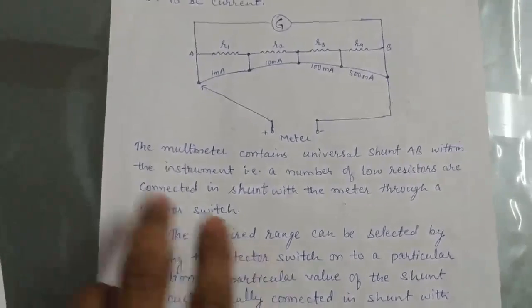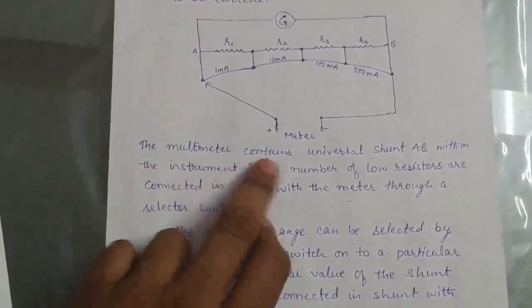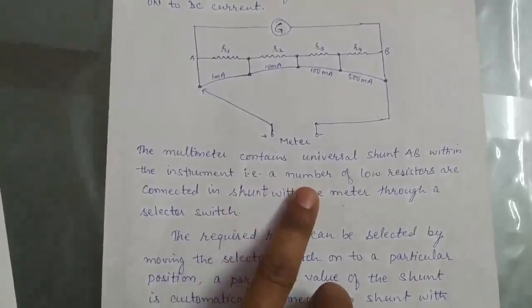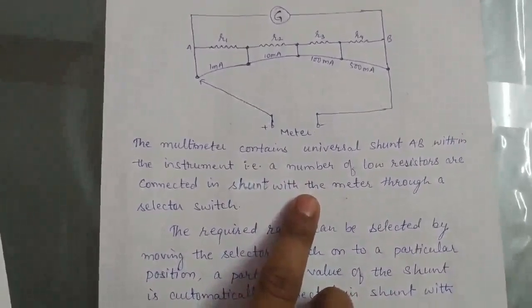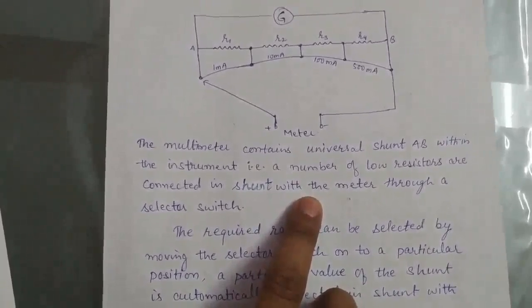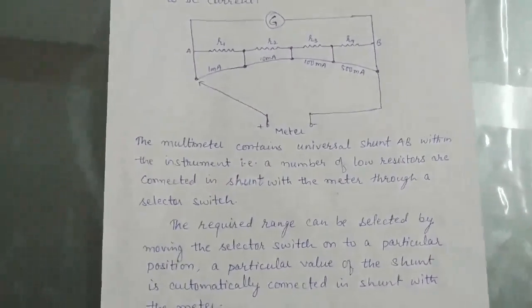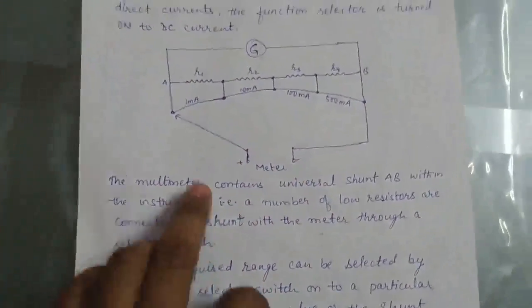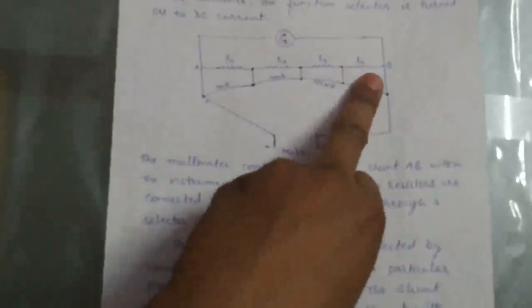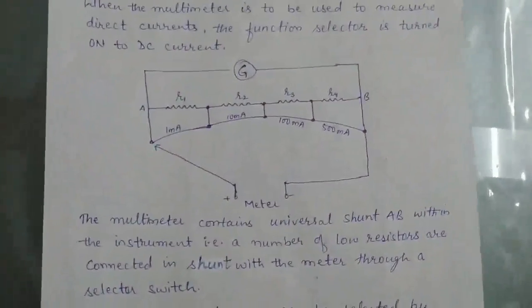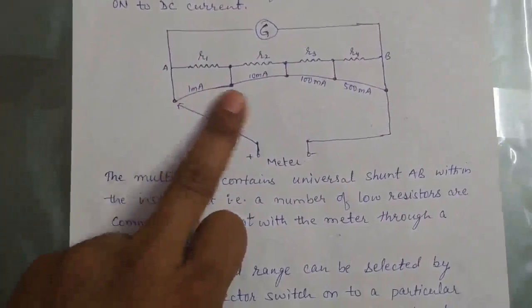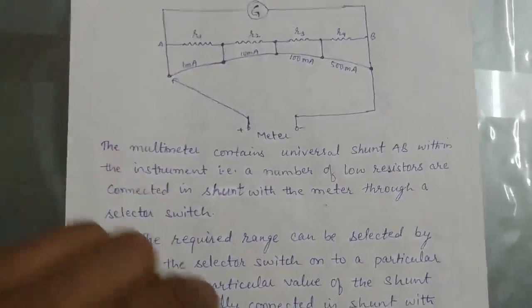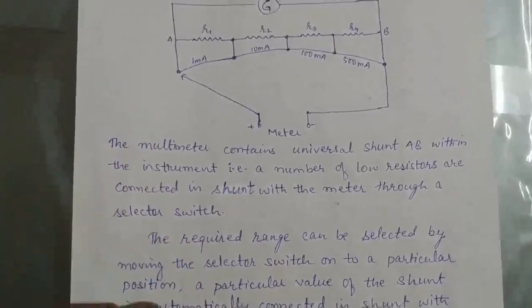These points - the multimeter contains a universal shunt AB within the instrument. That means a number of low resistors are connected in shunt with the meter through a selector switch. I previously selected a range. This is a low resistance that automatically measures a value of current.